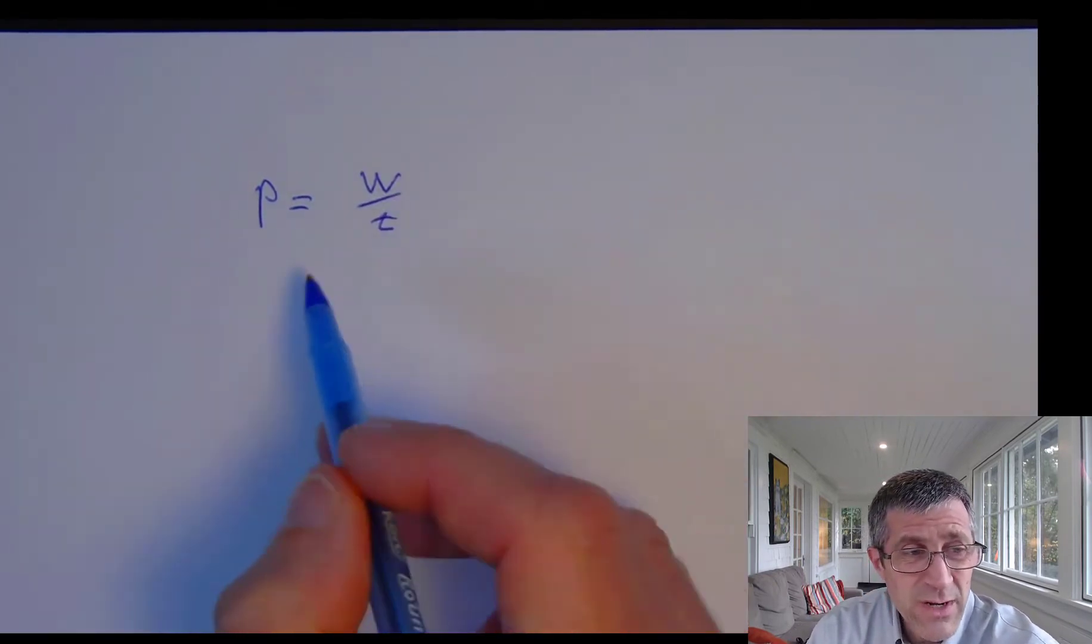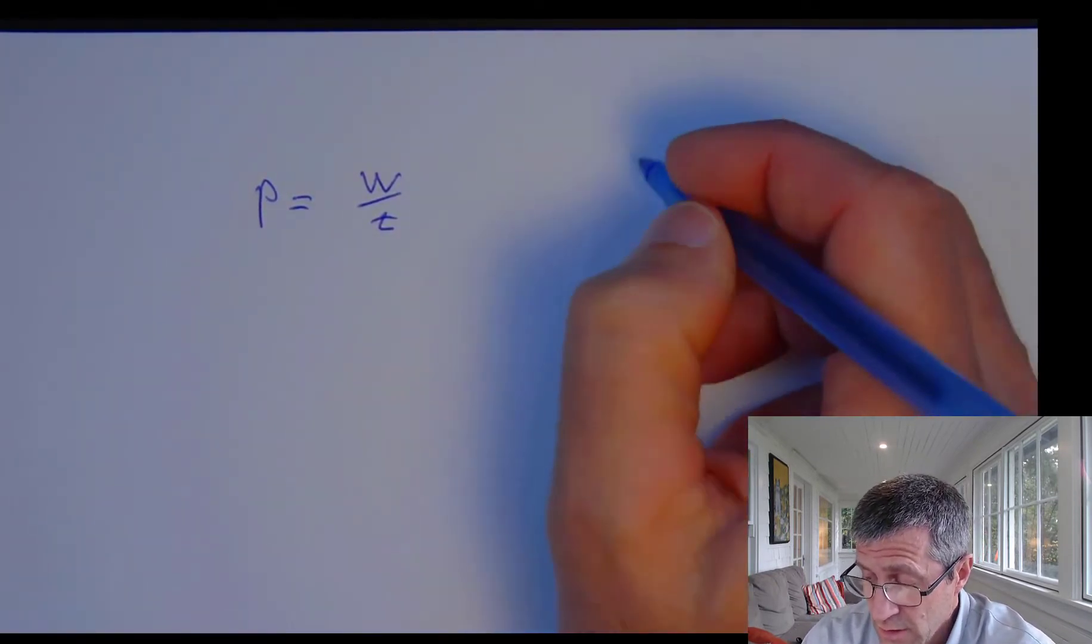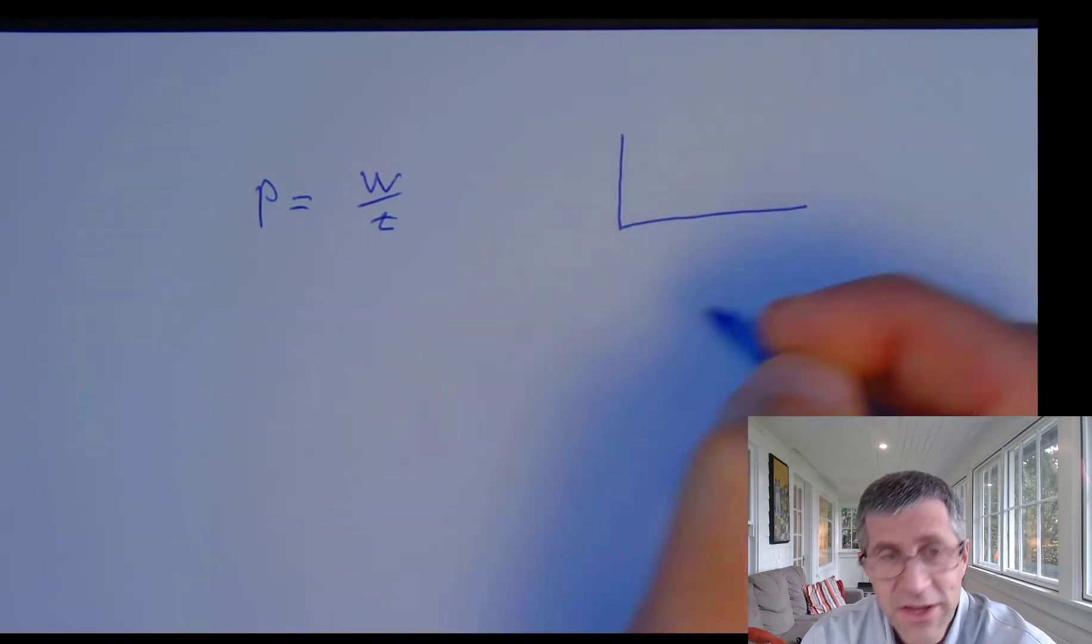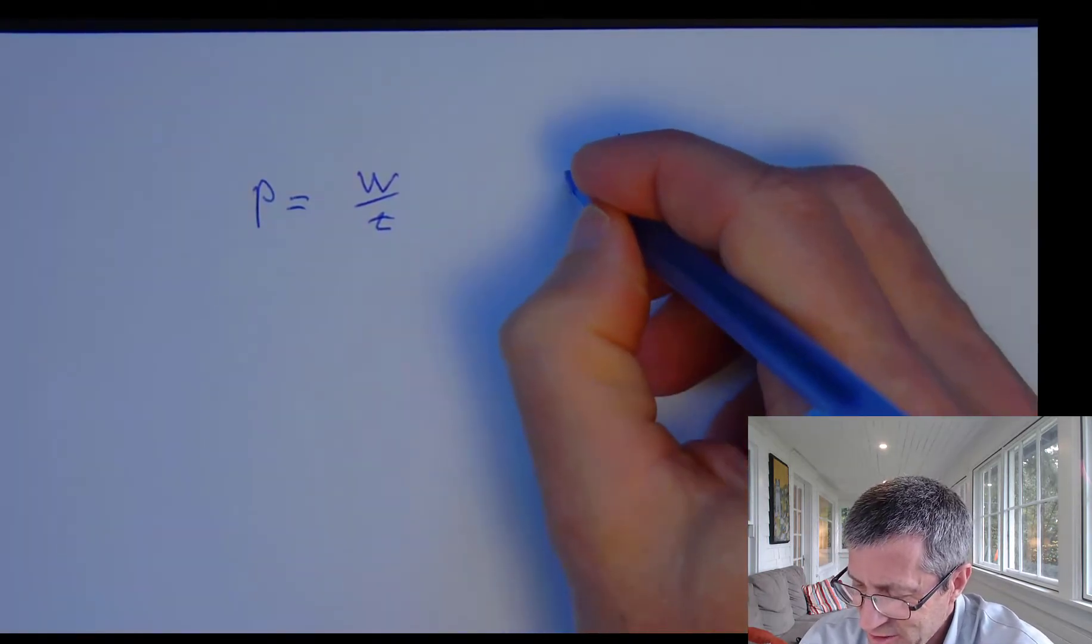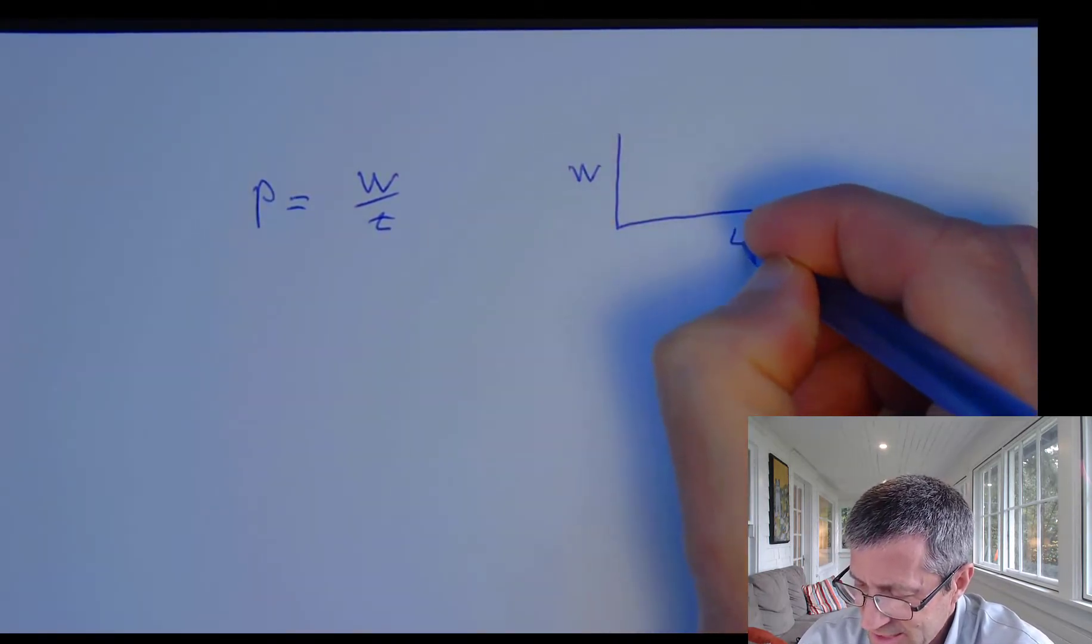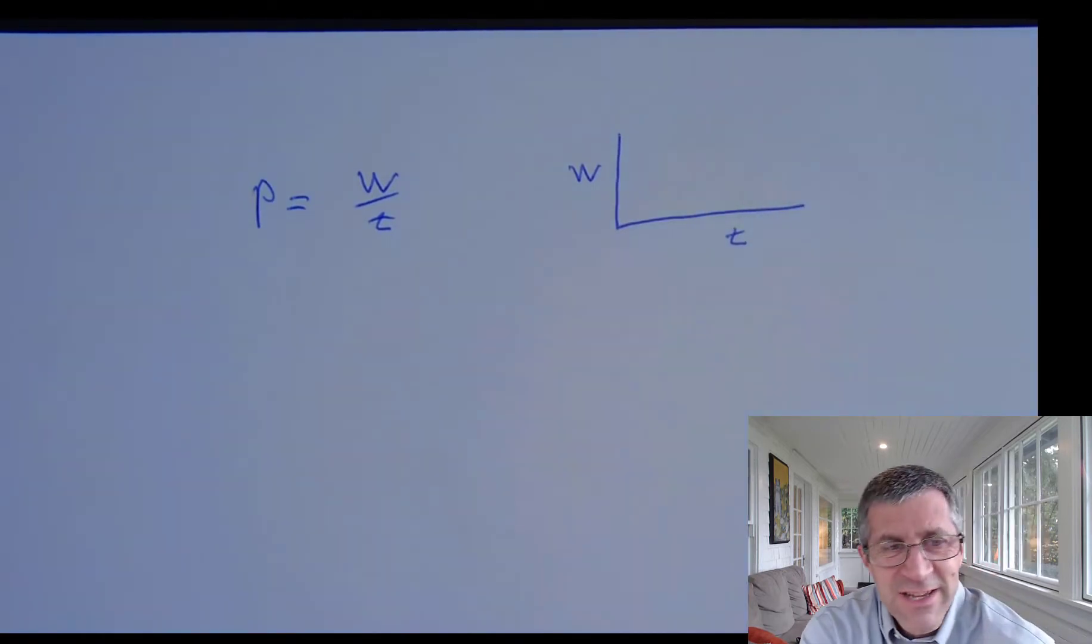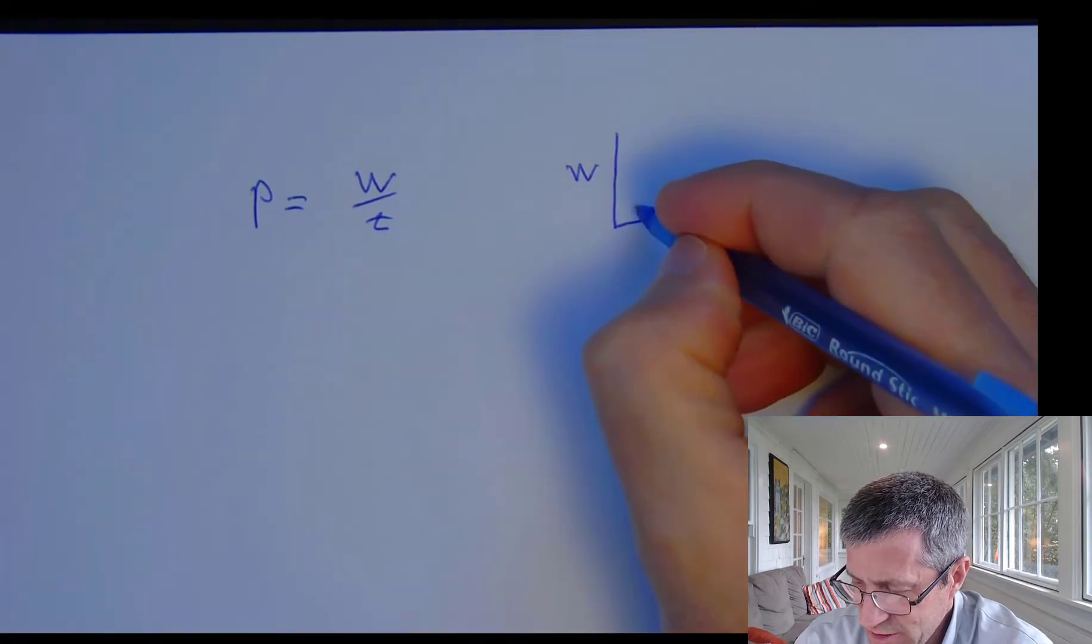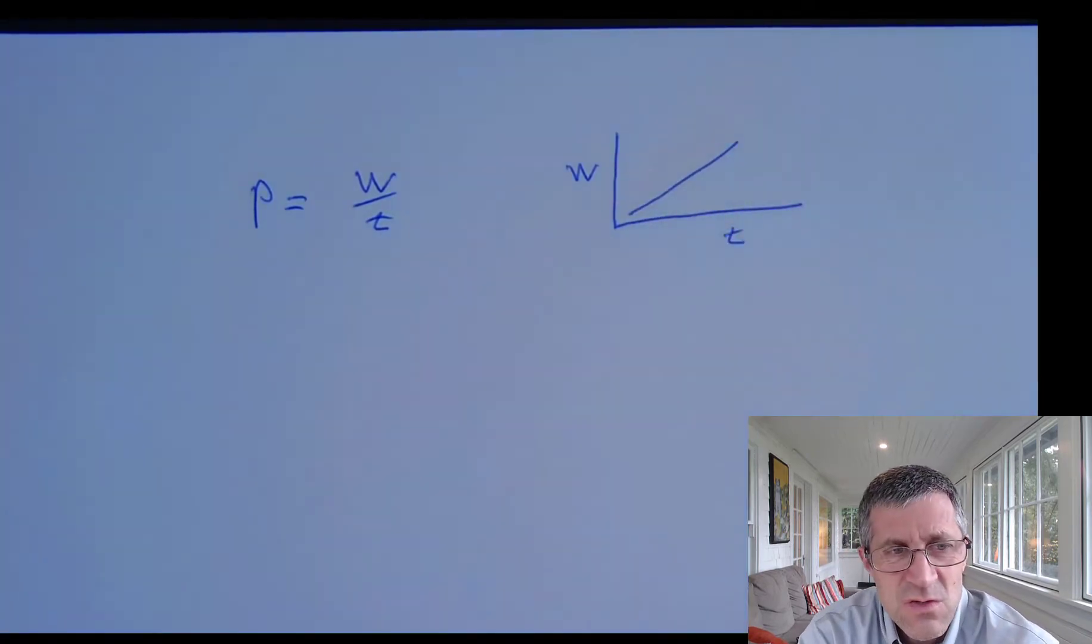Whenever I have three things, I can always graph them. So if I graph work and time, power is going to be the rate at which those two change. So it's the slope of that line.